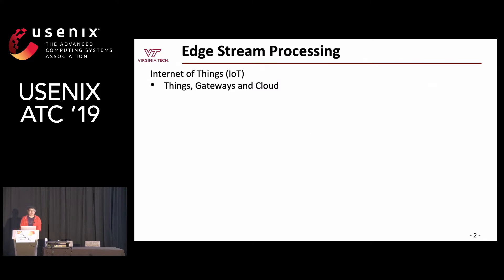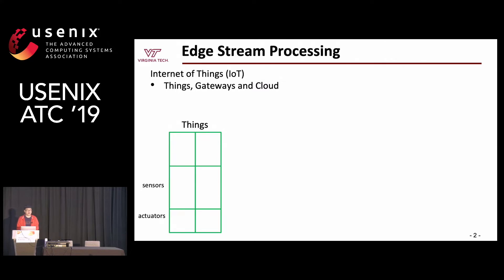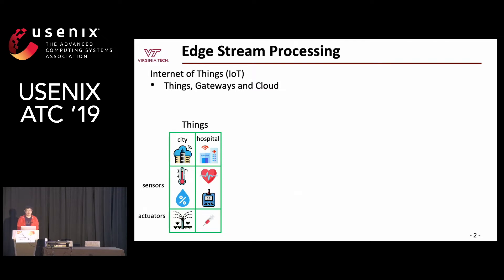Internet of Things applications are growing rapidly. Generally speaking, IoT systems contain sensors, gateways, and the cloud. Sensors could be either sensors or actuators. For example, in a smart city, the sensors could be temperature sensors and the actuators could be sprinklers. And it is similar for a smart hospital.